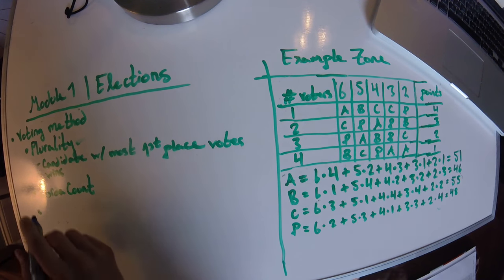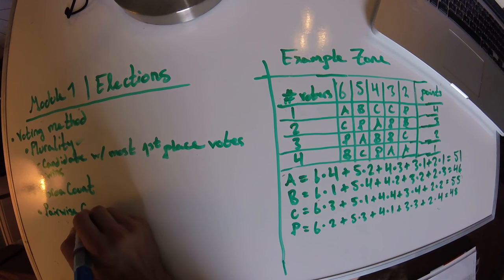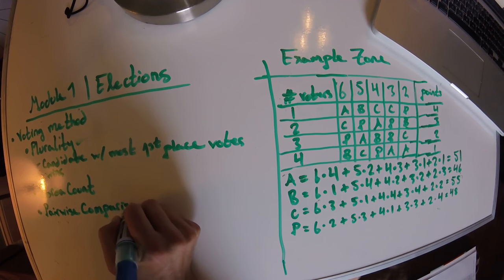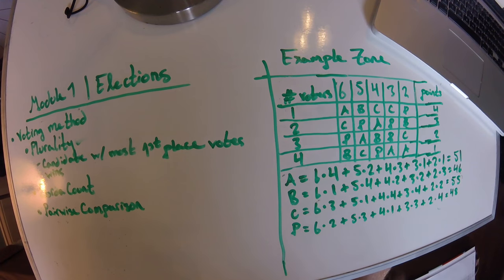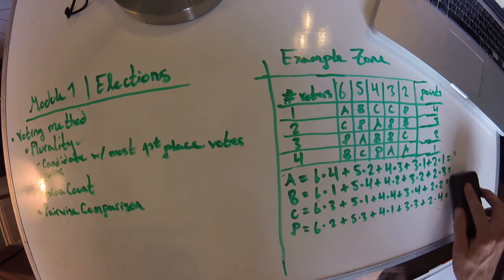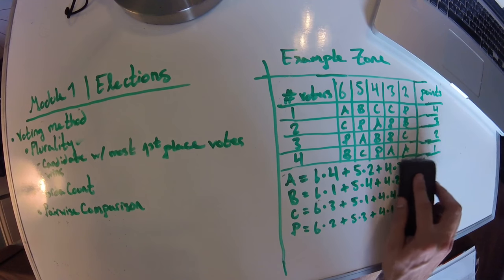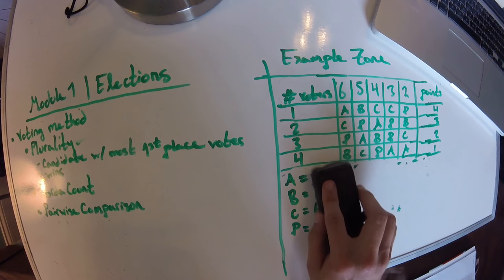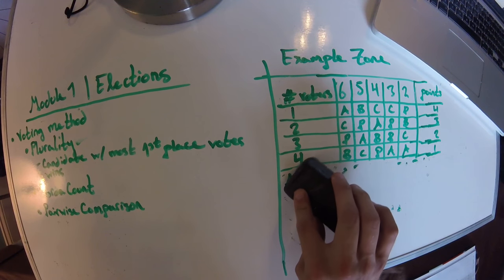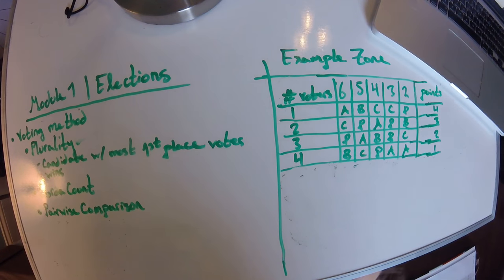The next method we're going to look at is pairwise comparison. What this means is that we take each possible pair of candidates and figure out who wins between that pair. We give the winner one point and the loser zero points. If we get a tie between two of them, we give each a half point, though that won't happen in this example.